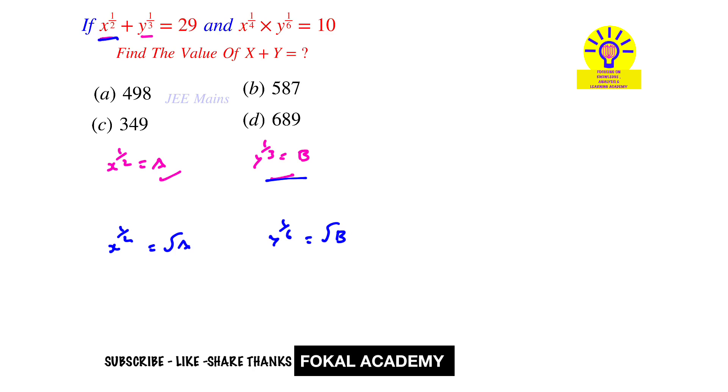Now replace these terms with a and b. By rewriting the equations it becomes a plus b equal to 29. Similarly, replace these two terms with root a and root b, so it becomes root a times root b equal to 10.